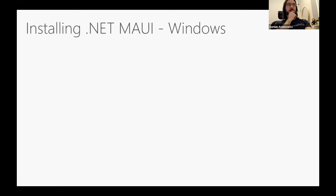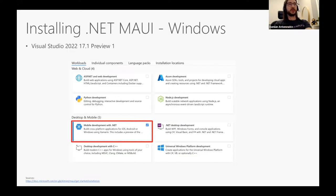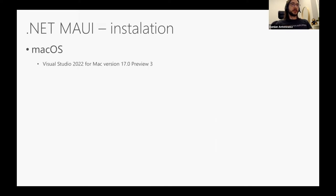If you'd like to play with .NET MAUI now, here's how. On Windows, the best way is to use the preview version of Visual Studio 2022 and remember to select the mobile development workload during installation — Visual Studio should install everything for you. On macOS the story is the same: use a preview version of Visual Studio 2022. However, on my macOS I didn't succeed in configuring MAUI — it's still not compiling. Maybe you'll have better luck.